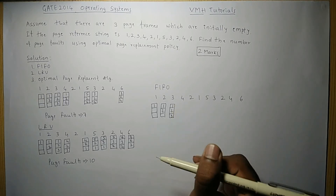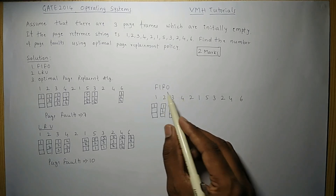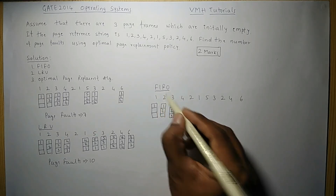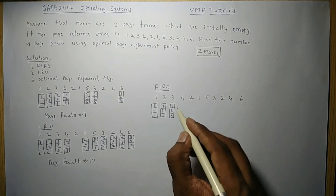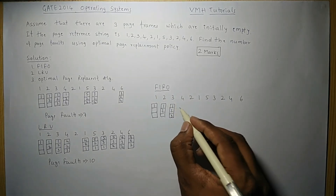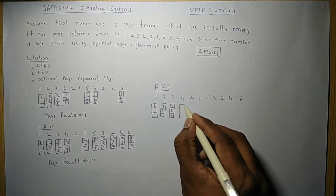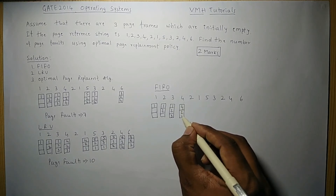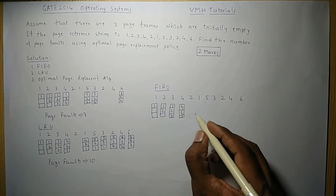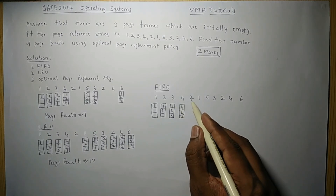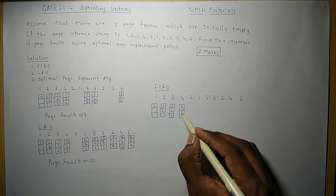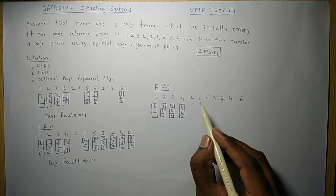The next reference is for page 4, not available. In FIFO, we replace the page that entered first. Page 1 entered first, so page 1 is replaced with page 4. Pages 2 and 3 remain. The next reference is for page 2, which is already available — no page fault.